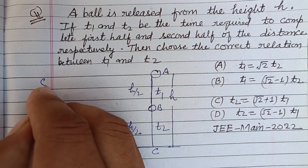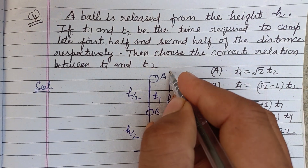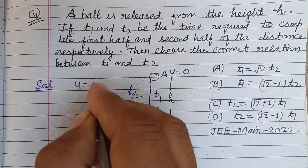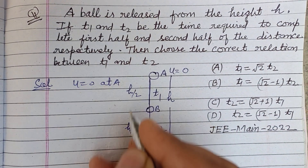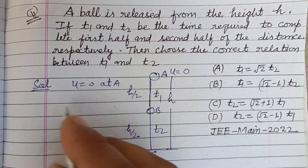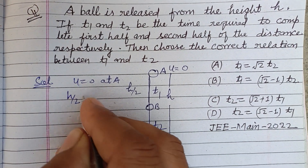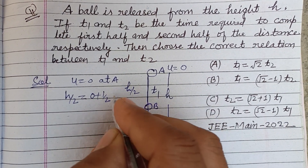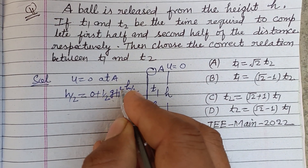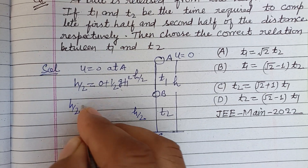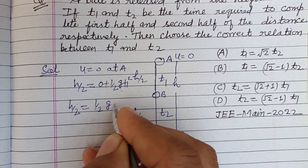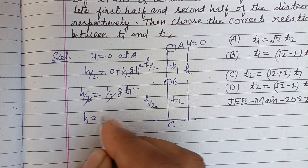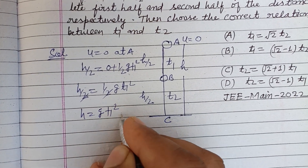Initially, u = 0 at point A. For the first half, using s = ut + ½gt²: h/2 = ½g·t1². The halves cancel, giving us h = g·t1². This is our first equation.